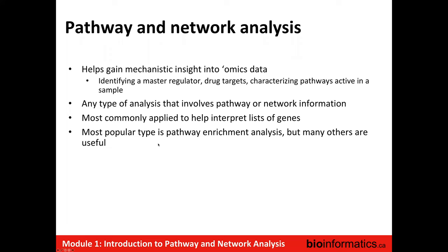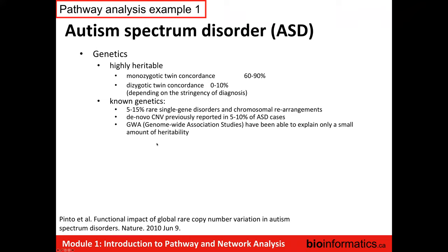Just to go into some examples: the first example is a project we worked on more than 10 years ago on autism spectrum disorder. Autism is a genetic disease, known to be highly heritable from twin studies. At the time the study was started, a small amount of the heritability could be explained from individual gene mutations linked to single rare gene disorders. It was also known that de novo copy number variants were reported in a number of cases, so there was thinking that de novo copy number variants were important in this disease.